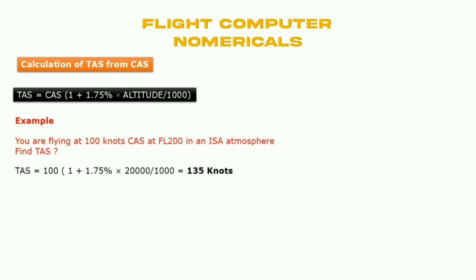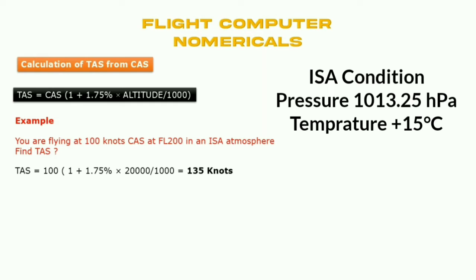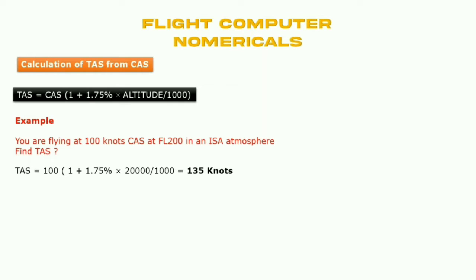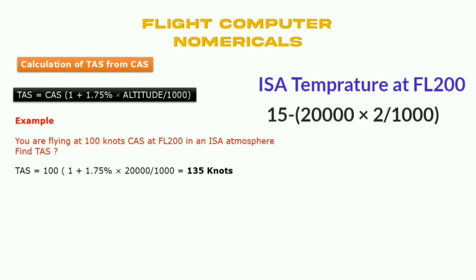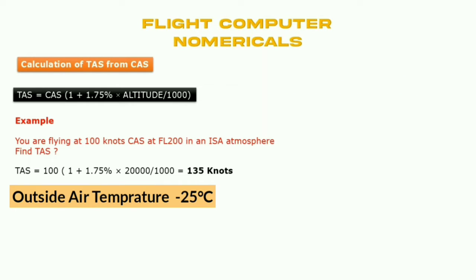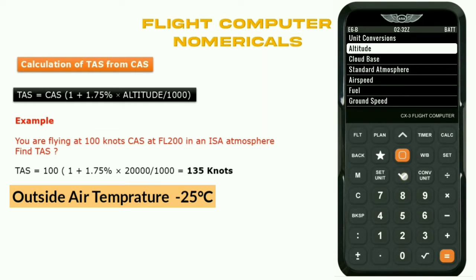Flight level or pressure altitude is measured from ISA conditions, that is 1013.25 hectopascal pressure setting where temperature is plus 15 degrees Celsius. When altitude increases, temperature decreases at 2 degrees Celsius per thousand feet. So at 20,000 feet, temperature from ISA will be: 15 minus (20,000 × 2 / 1000), giving an outside air temperature of minus 25 degrees Celsius.